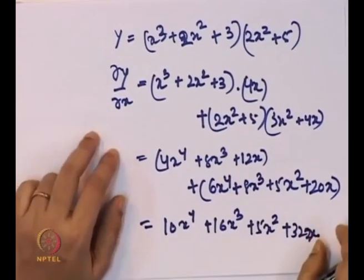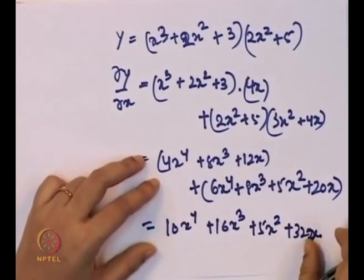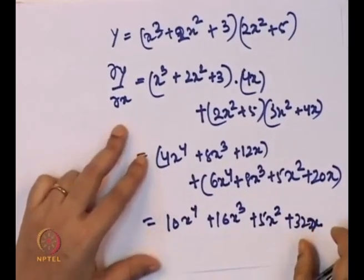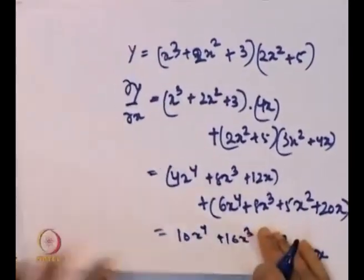When the functional form is a product of two functions, we take derivatives by keeping the first function constant and taking the derivative of the second, then keeping the second function constant and taking the derivative of the first.